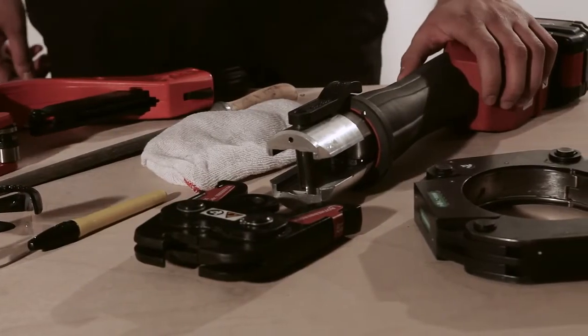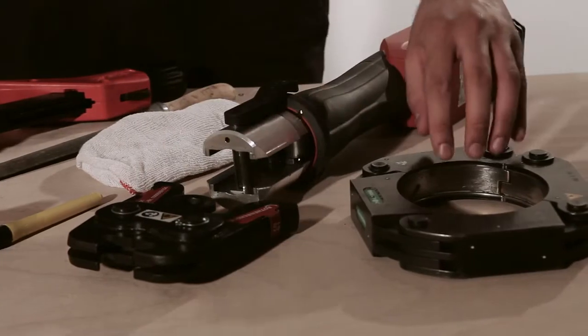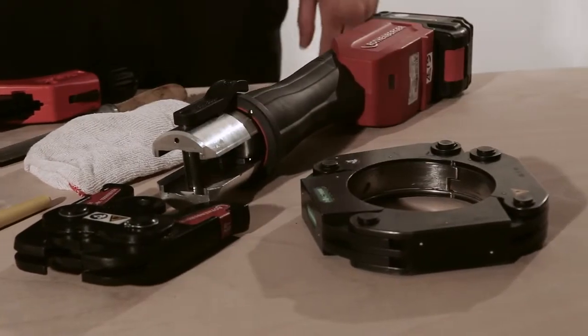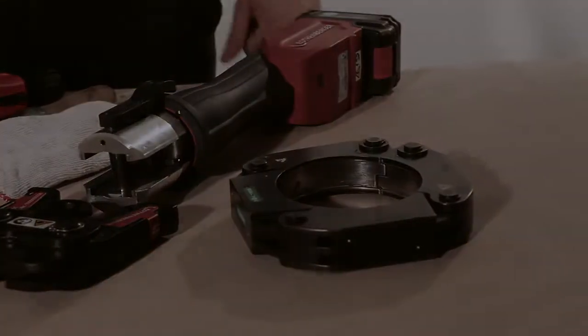You will need for the jointing process a Rothenberger RoMax 3000 press tool, complete with actuator and an appropriate sized pressing ring for the diameter of the fitting you are working on.